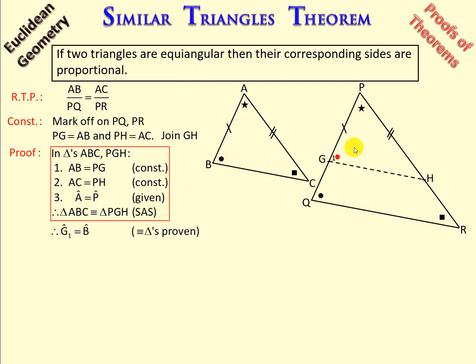Now, if these two triangles are congruent, we can now conclude that angle B is equal to angle G1, and the reason for B being equal to G1 is congruent triangles.